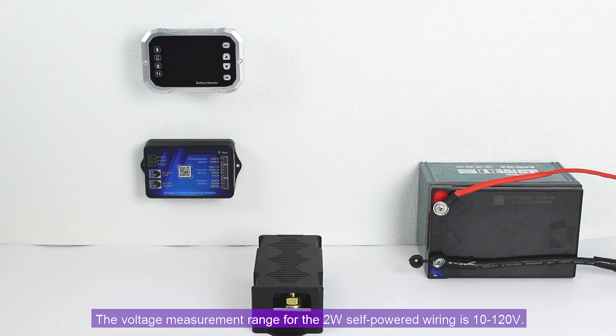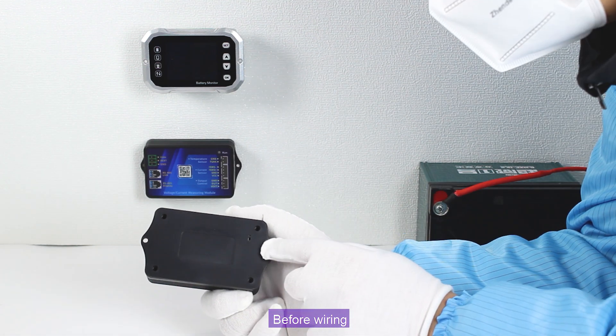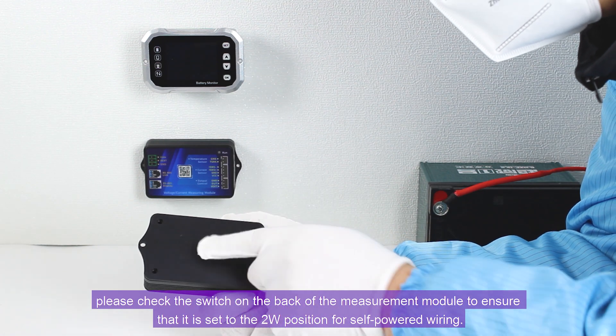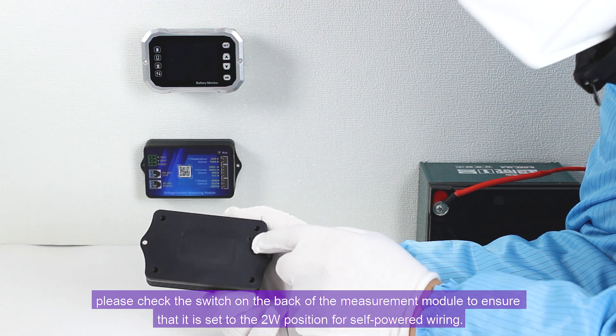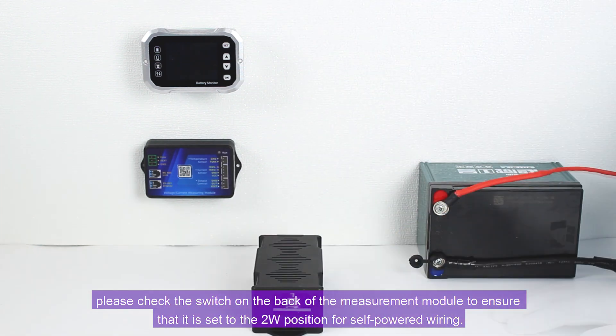The voltage measurement range for the 2W self-powered wiring is 10 to 120 volts. Before wiring, please check the switch on the back of the measurement module to ensure that it is set to the 2W position for self-powered wiring.